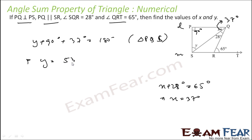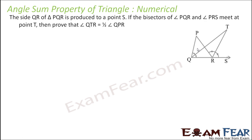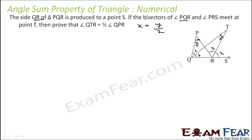Let's take one last question. It says that side QR of triangle PQR is produced to S. The bisector of angle PQR and the bisector of angle PRS meet at point T. We have to prove that angle QTR equals half of angle QPR. Let angle QPR be y and angle QTR be x. Since these are bisectors, let the bisected halves be angle 1 and angle 2 respectively.